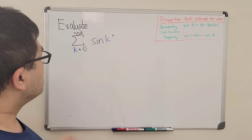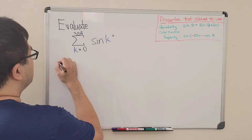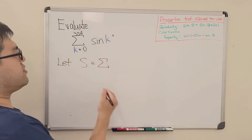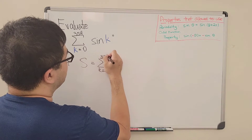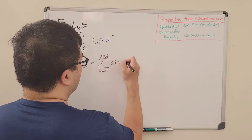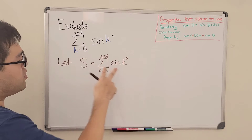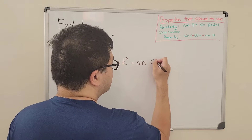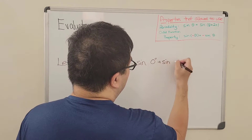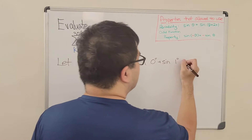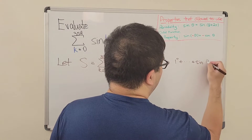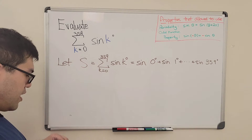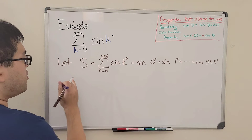Having those two properties, let's jump into the solution. I'm going to call this big sum the letter S. The summation is: S equals sine of 0 degrees plus sine of 1 degree, all the way up to sine of 359 degrees.